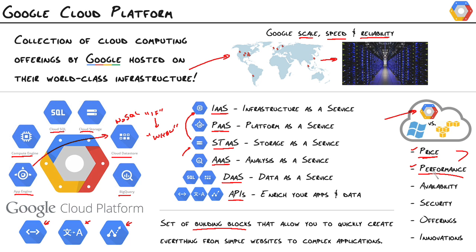put it up in each cloud, measure it, and find out which one is right for you. Otherwise, they're all pretty fast. Availability shouldn't be too big of a factor either, because all these clouds support the five nines — 99.999% availability.